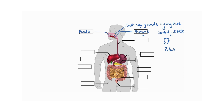After the pharynx, there is a muscular tube which we call the esophagus. The esophagus basically connects the mouth to the stomach. It moves food in a particular rhythmic movement which we call peristalsis. Peristalsis smoothly allows food to pass from the mouth to the stomach.